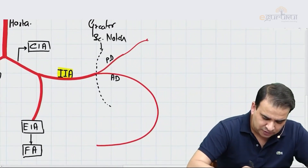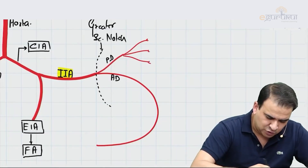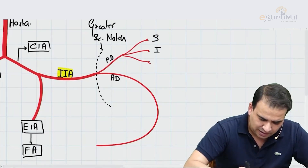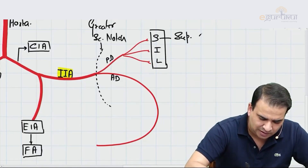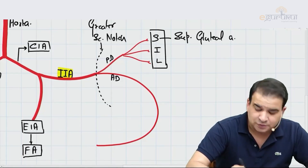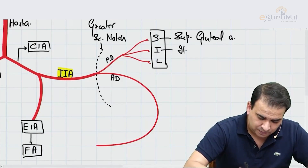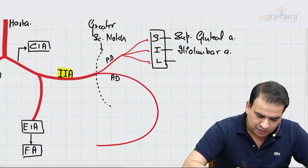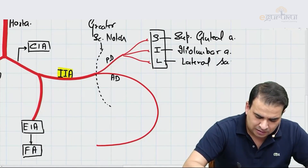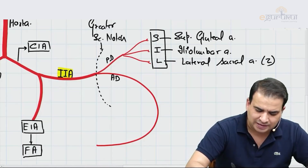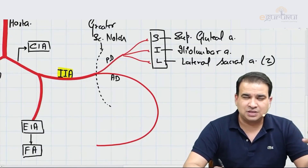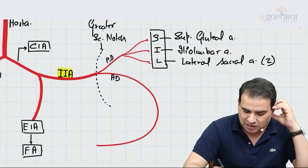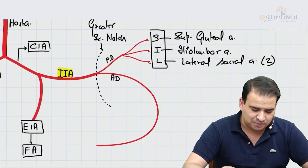The posterior division gives off three main branches, remembered with the mnemonic SIL: S for Superior gluteal artery, I for Iliolumbar artery, and L for Lateral sacral artery (two in number on each side). These branches mainly supply the wall rather than the viscera.